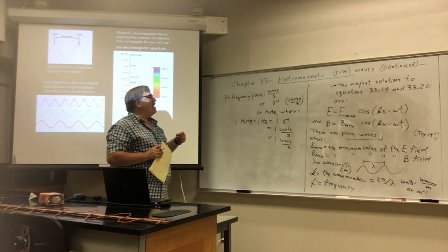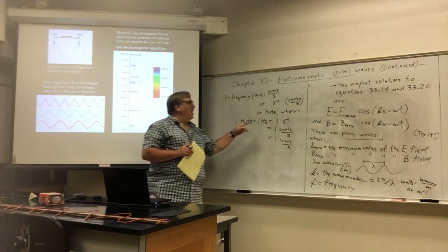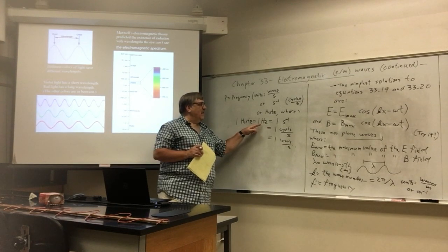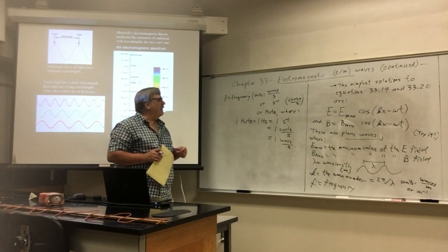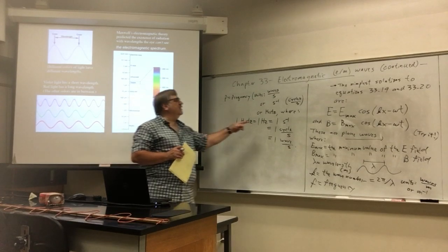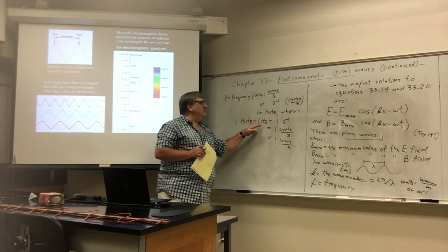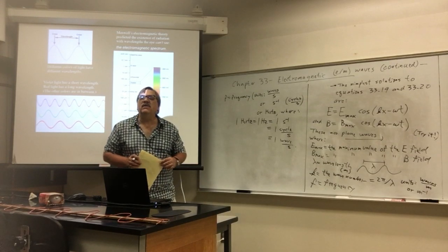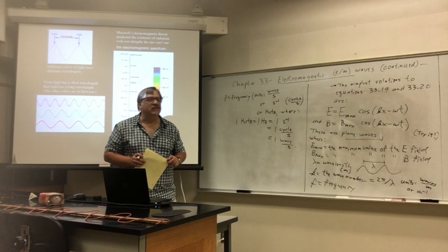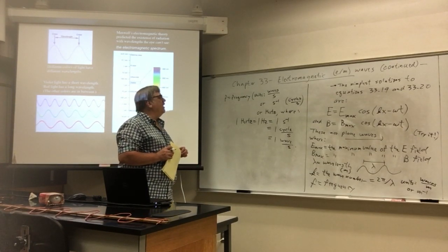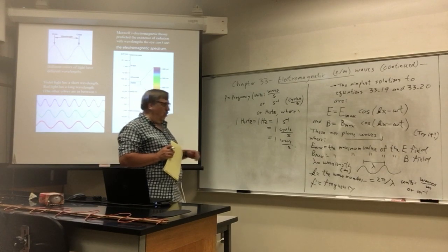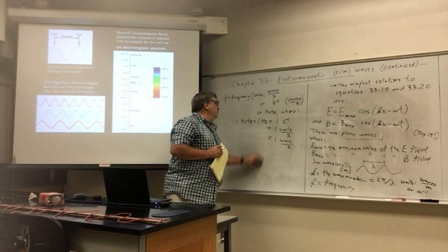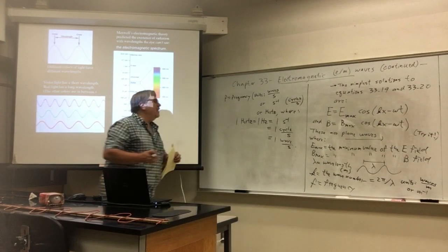AM radio is typically measured in kilohertz — thousands of cycles per second. FM radio is typically megahertz — millions of cycles per second. Radar waves are typically gigahertz — billions of cycles per second. And microwaves are again multiple gigahertz.